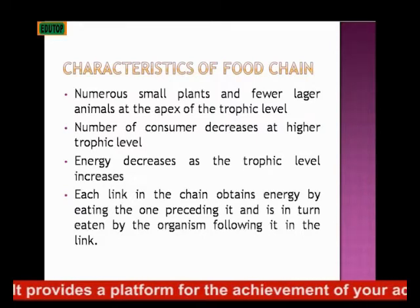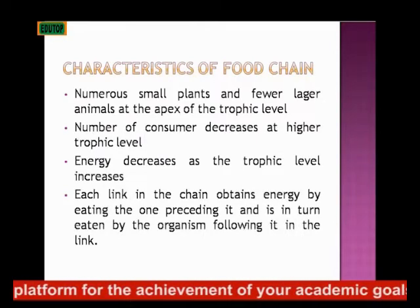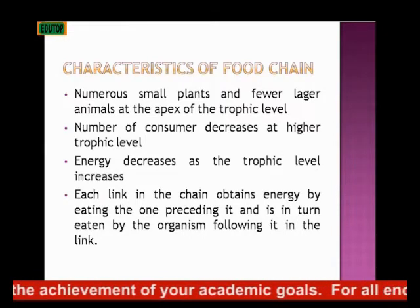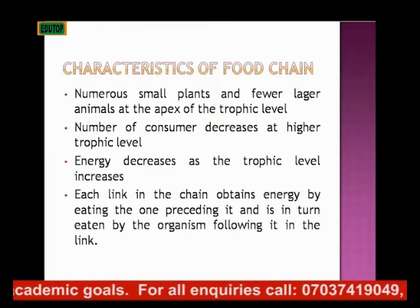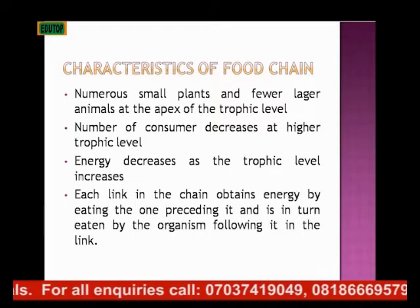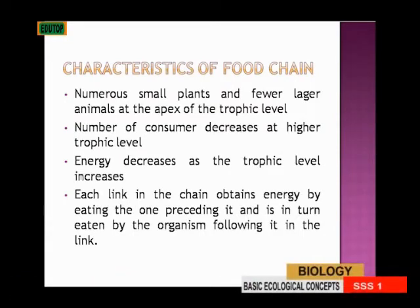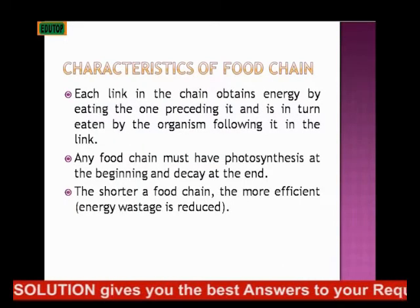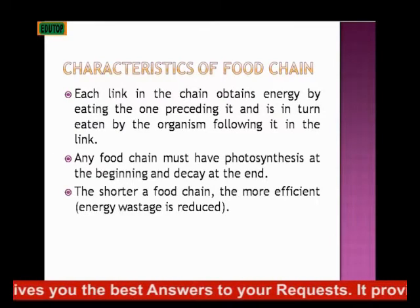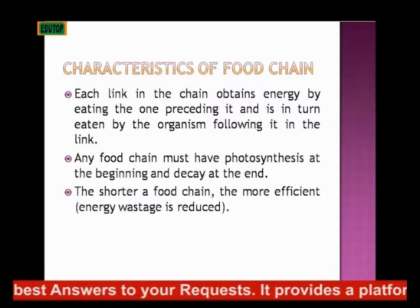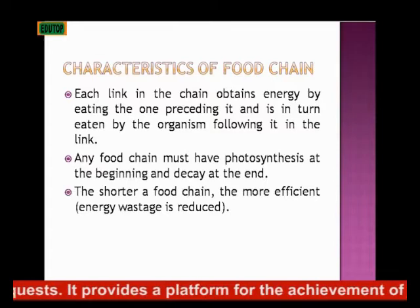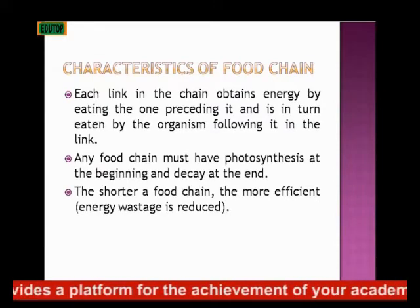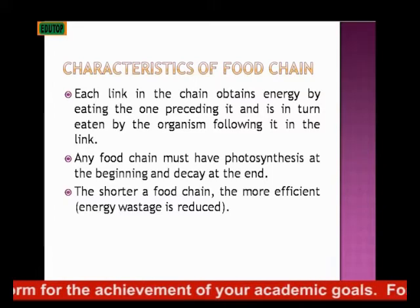Another characteristic of the food chain is that each link in the chain obtains energy by eating the one preceding it, and in turn, it is being eaten by the organism following it. Looking at the terrestrial food chain: green plants, grasshopper, snake, hawk, man — the grasshopper eats the green grass, man eats the snake. Each organism obtains energy by eating the one that precedes it, and the next one after it eats it in turn.